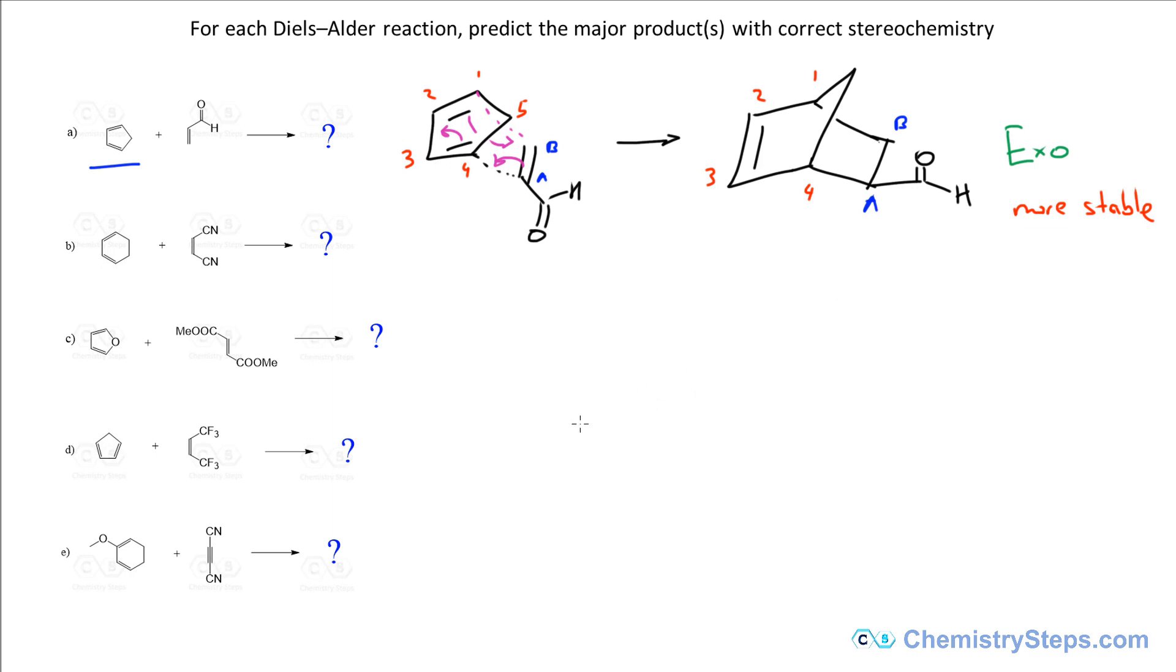For both the endo and the exo product, it is also possible to have the formation of the enantiomer. If I put the aldehyde group now on this side, then this is going to be the enantiomer of the endo product. So two endo products and two are enantiomers.